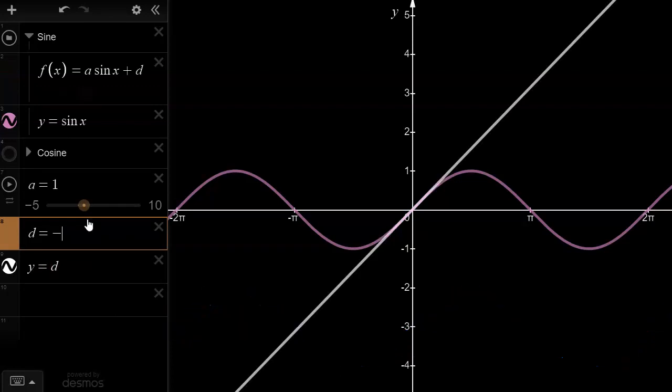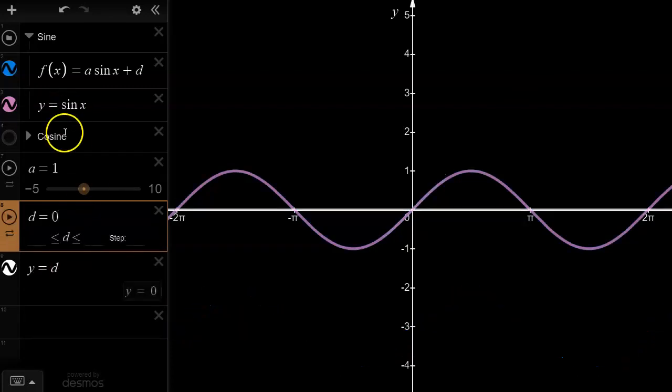So what I'm going to do is I will reset the d value to 0, and a is already equal to 1, and we'll go from there. So let's say I want to figure out the maximum and minimum points on the function y equals 3 sin x minus 2.